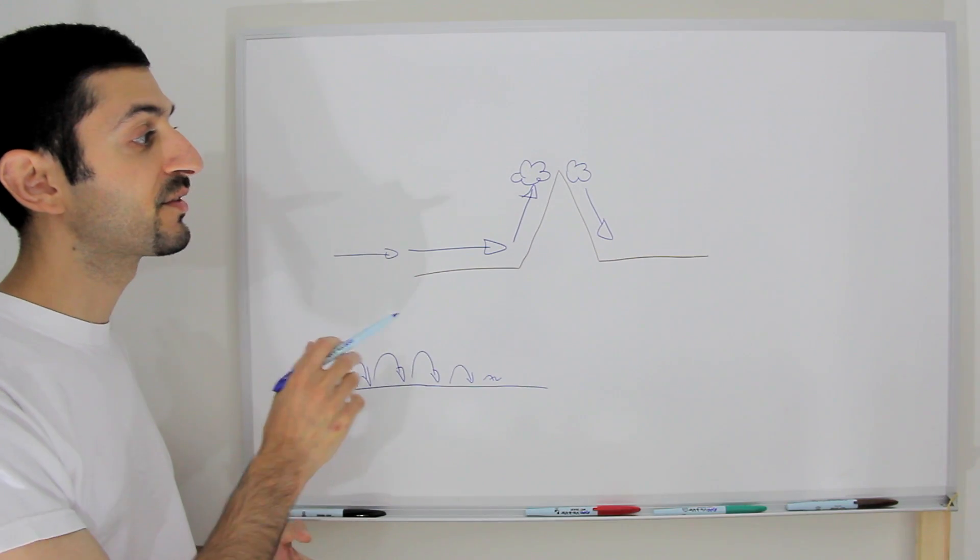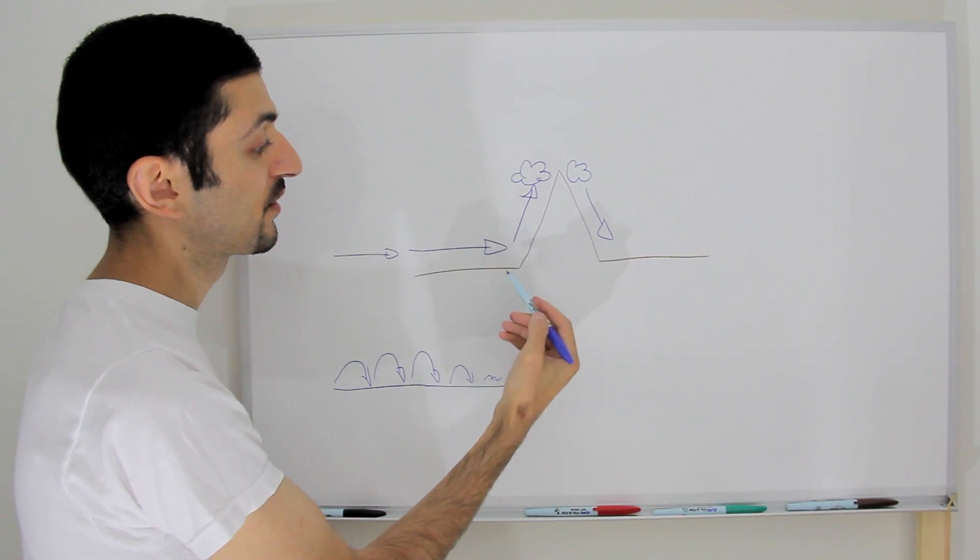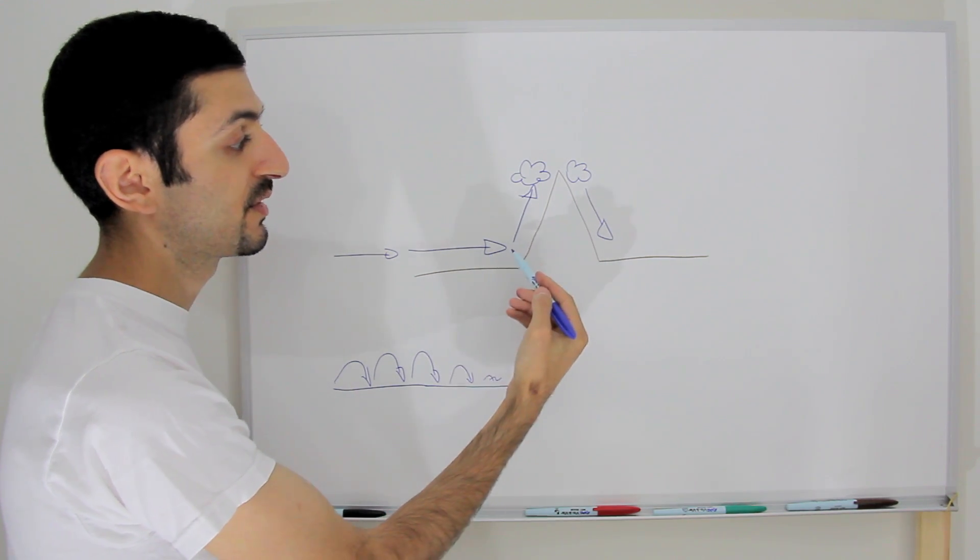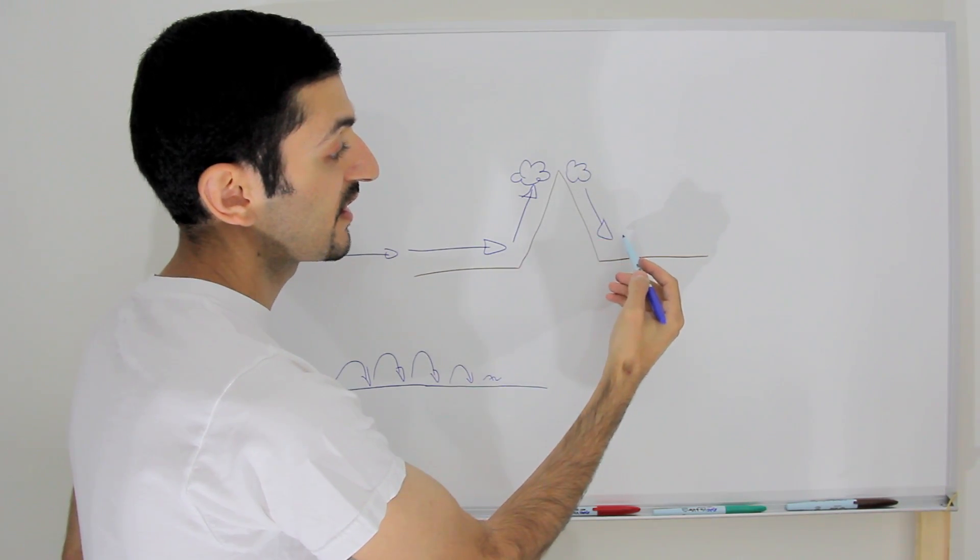Well the same thing happens with air currents when they move over mountains. So here you have an air current that underwent orographic uplift, so then it descends, the clouds go away, but then it wants to go back up and clouds form.